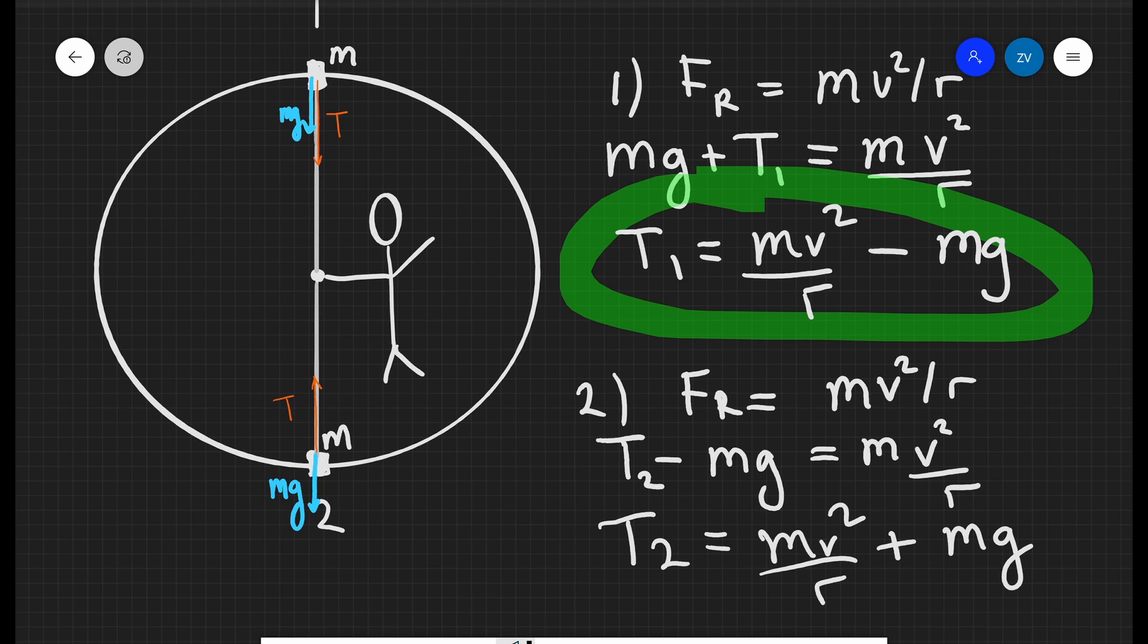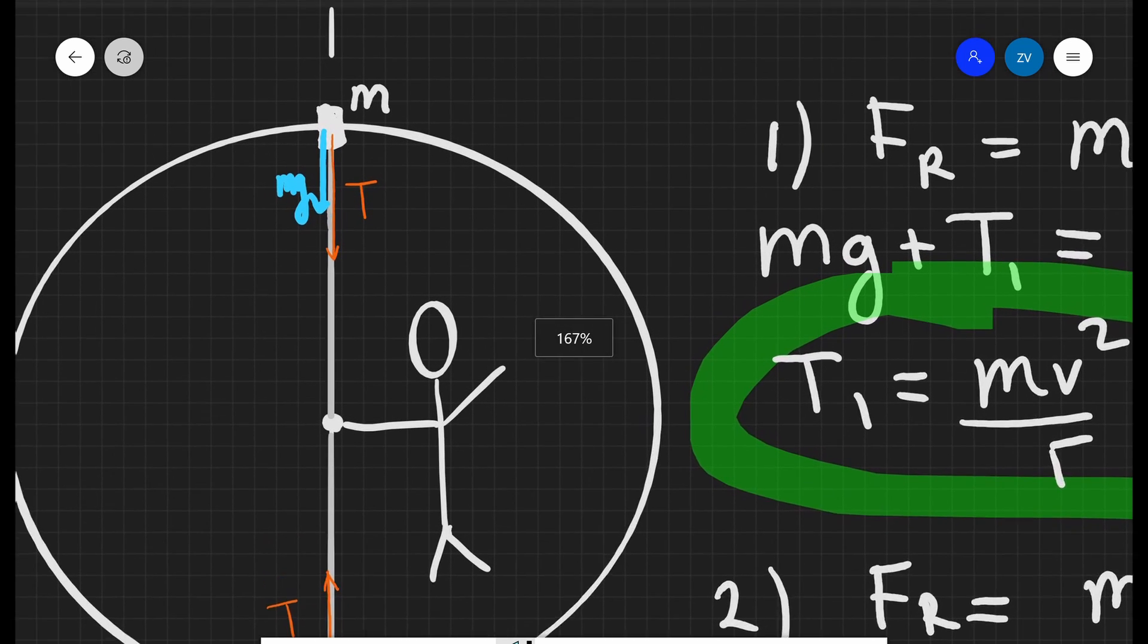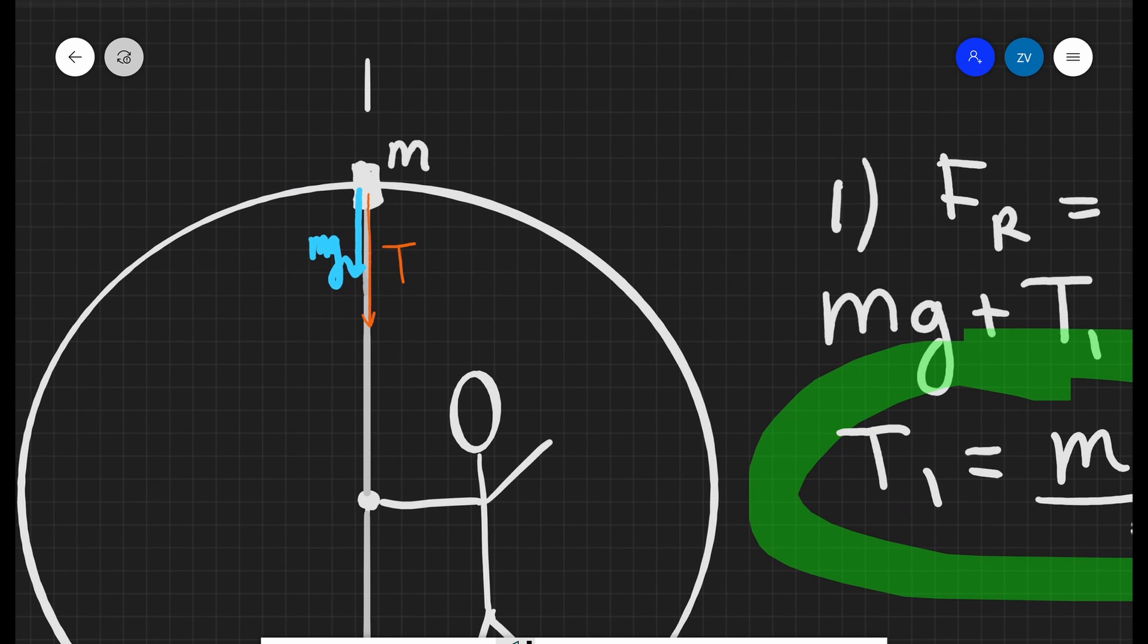This result makes a great deal of physical intuitive sense as well. In position one, when the weight is acting towards the center, the centripetal force, or remember the center seeking force, is actually in part provided by the force of the weight.